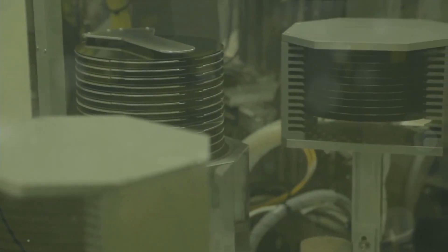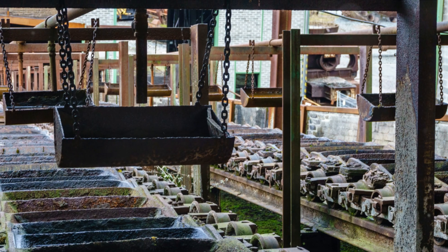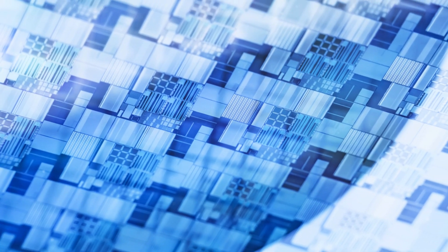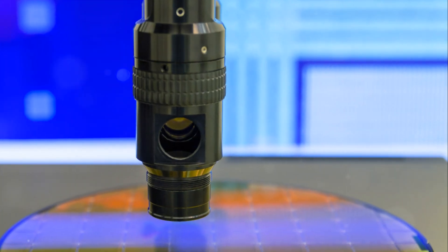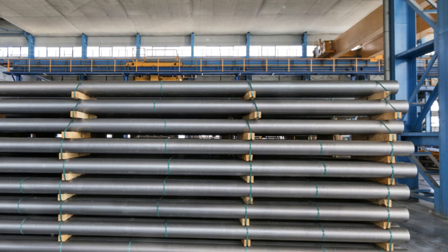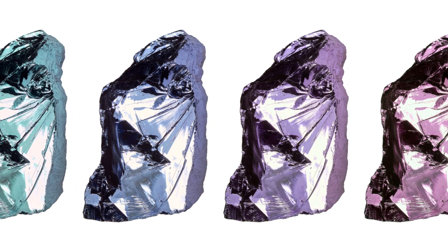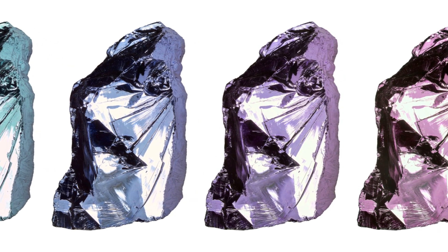Once the ingot is fully formed, it's allowed to cool. What we're left with is a large cylindrical crystal of silicon. But we're not done yet. This ingot is still too thick to be used in a solar cell. The next step is to slice it into thin wafers. To do this, the ingot is secured and a wire saw is used to cut it. This isn't your everyday saw, though. It uses a slurry of silicon carbide or diamond to gradually wear away the silicon, creating thin slices or wafers.